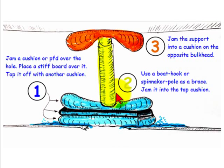Next, use a brace such as a boat hook, spinnaker pole, or whisker pole, jamming into the cushion on top, and finally, place a cushion on the opposite bulkhead and jam the top of the brace into that cushion to hold your patch firmly against the hull.